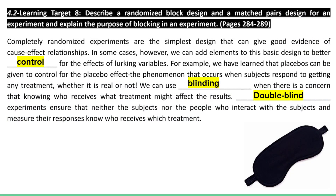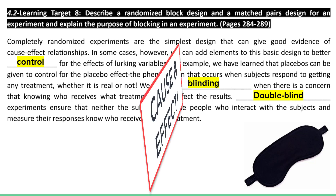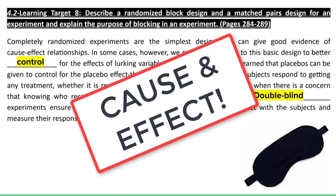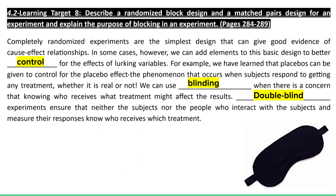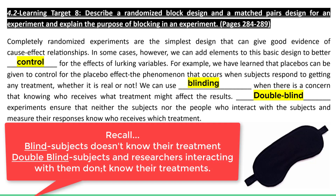Moving on to Learning Target 8, the last learning target for section 4.2: describe a randomized block design and a matched pairs design for an experiment. In general, a completely randomized experiment is the simplest design that can give us good evidence for a cause-and-effect relationship — we'll learn more about that in 4.3. In some cases, however, we can add elements to the basic design to better control for lurking variables. For example, we learned about the placebo effect and how we could use blinding or a double-blind experiment to help control for that.